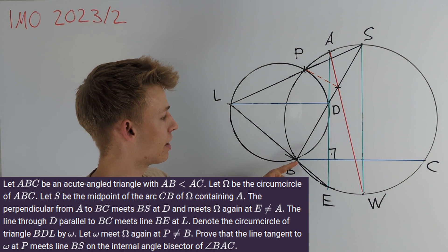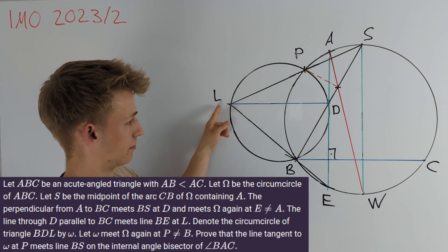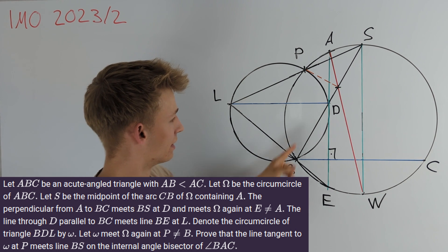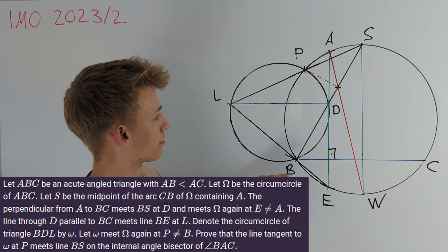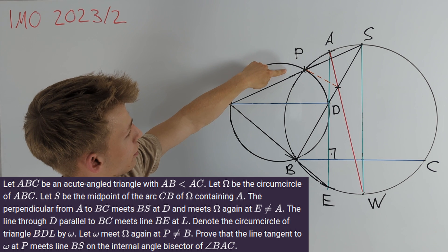Line BE intersects the parallel line to BC going through D at a point L. Now we draw in the circumcircle of triangle LBD and intersect it with the circumcircle of triangle ABC another time at a point P.